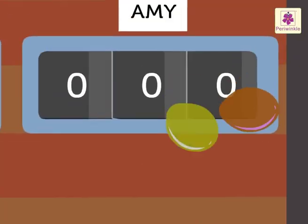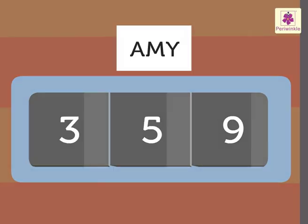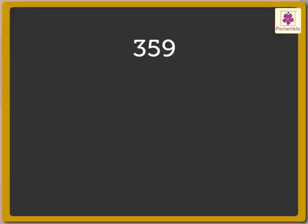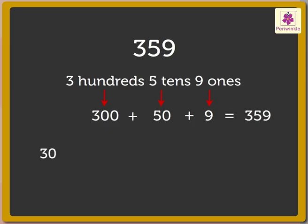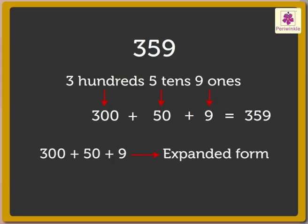Amy has burst 359 balloons in all. The number 359 has three hundreds, five tens and nine ones. We write this number as 300 plus 50 plus 9, which is equal to 359. Here, 300 plus 50 plus 9 is the expanded form, and 359 is the standard form.